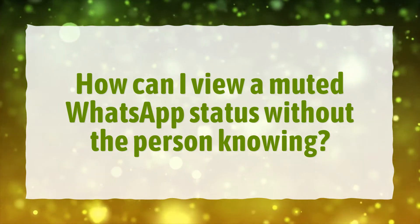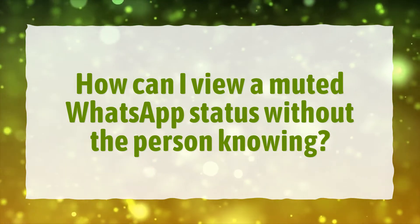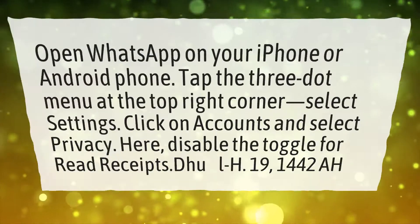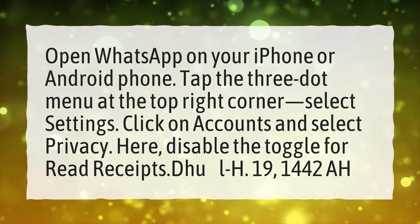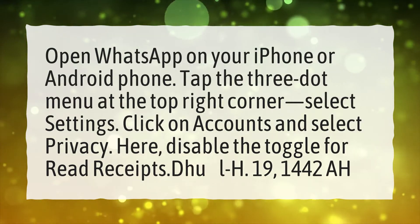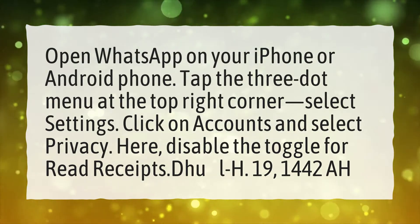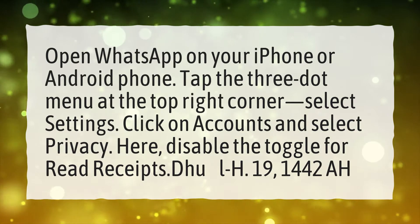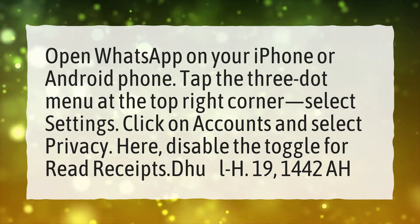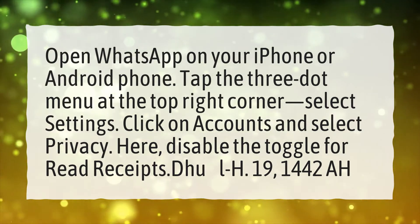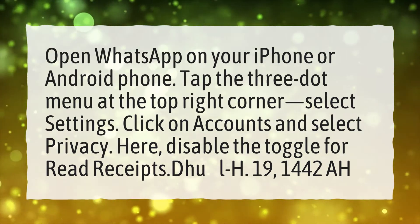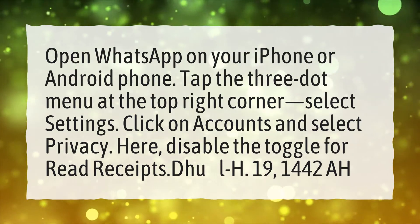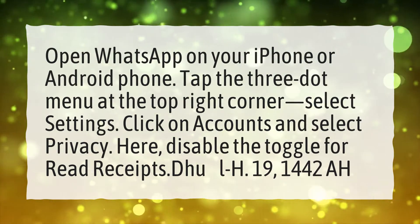How can I view a muted WhatsApp status without the person knowing? Open WhatsApp on your iPhone or Android phone. Tap the three-dot menu at the top right corner. Select Settings. Click on Accounts and select Privacy. Here, disable the toggle for Read Receipts.